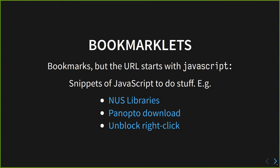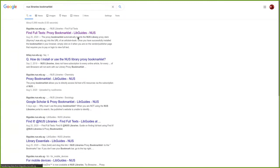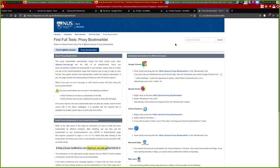Now we have the idea of a bookmarklet. A bookmark is a URL you save. A bookmarklet is like a bookmark except the URL starts with 'javascript:' - it's the JavaScript protocol, and whatever is after it is run as JavaScript code in the current page's context. They are very useful snippets of JavaScript to do things.